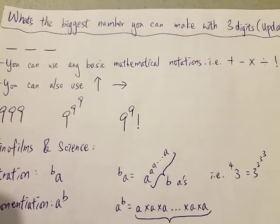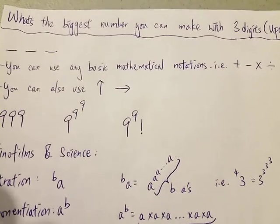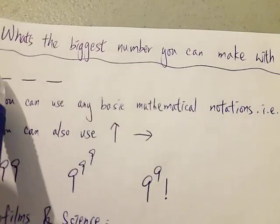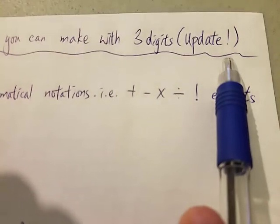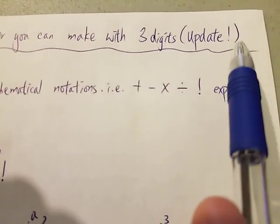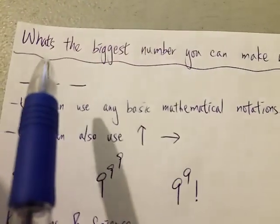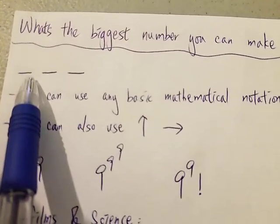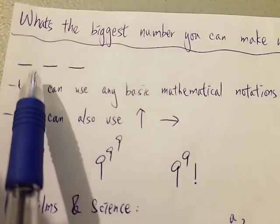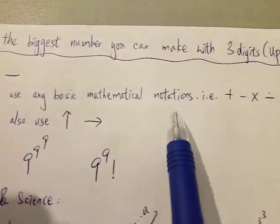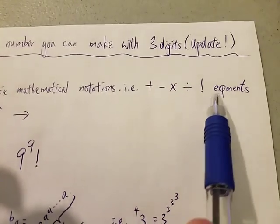Hi everyone! Today I want to do a follow-up video on what's the biggest number you can make with three digits. Last time I asked: what's the biggest number you can make with three digits, where for each digit you can put down any number from 0 to 9, or you can use any basic mathematical notation such as plus, minus, times, divided, factorial, or exponents.